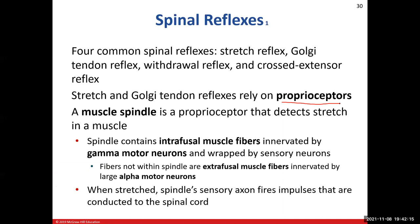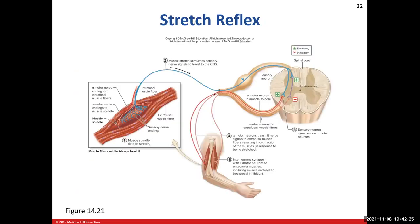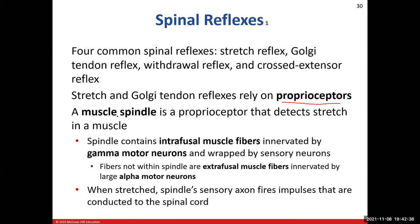The specific proprioceptor for the stretch reflex is called the muscle spindle. Here you can see the muscle spindle inside that muscle fiber — that's going to be our proprioceptor. That little structure is going to monitor the amount of stretch that goes on in the muscle. If you stretch a muscle too much, you could damage the tissue, so we have these reflexes to prevent that.